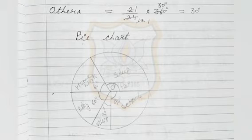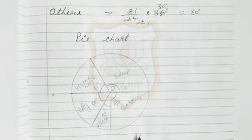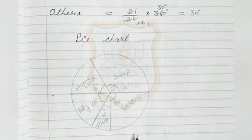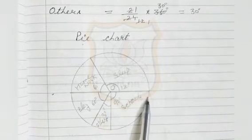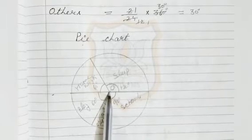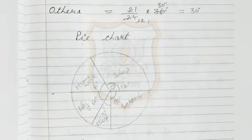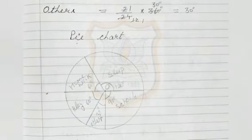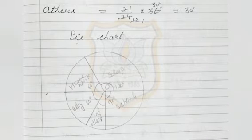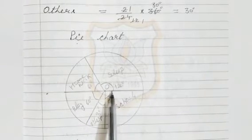Now we will draw the pie chart. I have already drawn the pie chart — you can see it here. First, draw a circle with any convenient radius and mark its center O. Then use the protractor and draw the angle of the sector for sleep, which is 120 degrees.